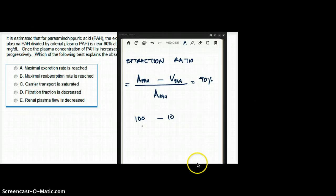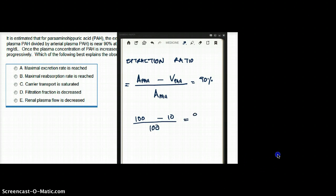And the arterial PAH is again, you have 100. So you're getting 90%. So that means only 10 of these are going back to the veins and 100 of these is getting excreted. So that's how they came up with the extraction ratio.